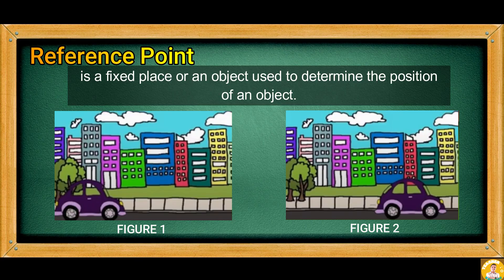Reference point is a fixed place or an object used to determine the position of the object. The car in the first activity has changed position when it was a matter away from the trees. This process of changing of an object's position is called motion.